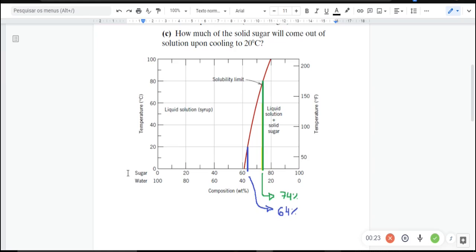sugar and water. This is a system. A system is when we have two components. We are basing this problem by temperature and by the composition.